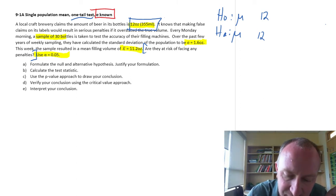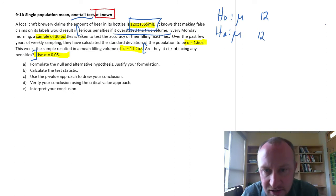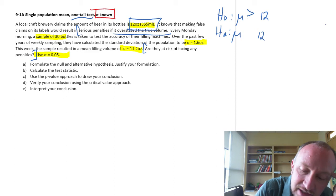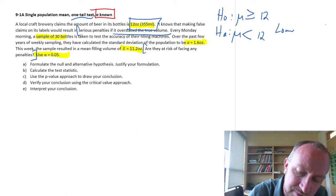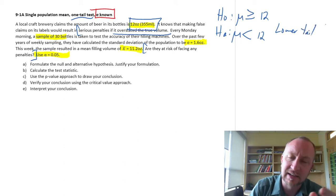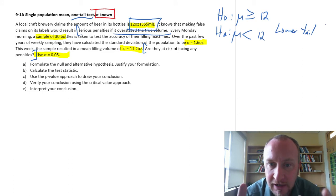If making false claims can cause serious penalties if they overstate the true volume, then if in fact the bottle says 12 but the mean filling weight is something less than 12, we'd face penalties. So what we want to test for is do we have at least 12 ounces? My null hypothesis is that we have at least 12 ounces, and our alternative hypothesis is that we have less than 12 ounces. So this is going to be a lower tail test.